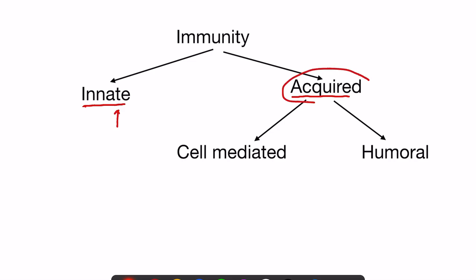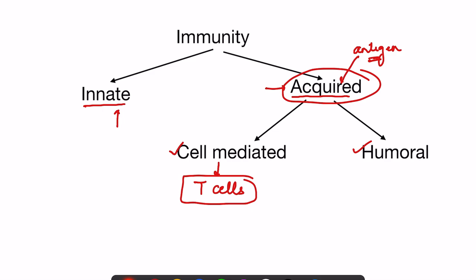Acquired immunity starts after exposure to an antigen — the foreign agent. It does not indiscriminately attack any foreign agent; a specific foreign agent must act on certain cells of the body to trigger activation. Acquired immunity is of two types: cell-mediated immunity and humoral immunity. In cell-mediated immunity, T cells are the key players, while humoral immunity involves soluble mediators rather than cells directly.